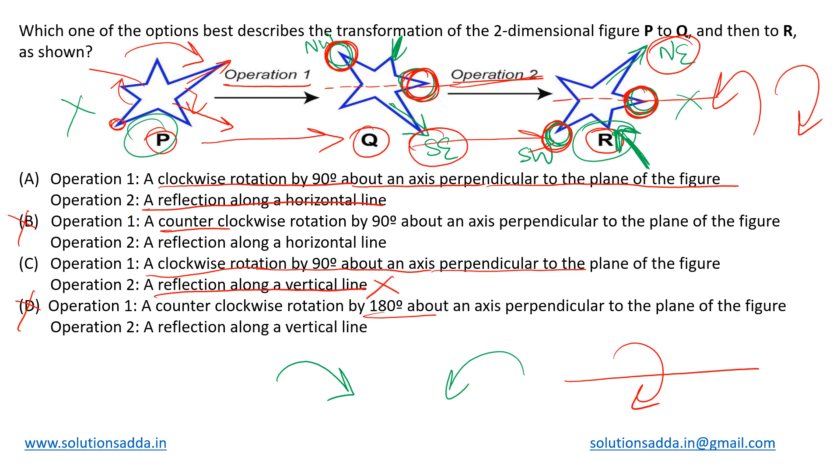Option C is saying reflection along a vertical line. No, if it were vertical, then this would have come on this side. The tallest leg would have come on the opposite side. That is not the case. They have taken the reflection along the horizontal axis, so I will go with option A as the correct answer.